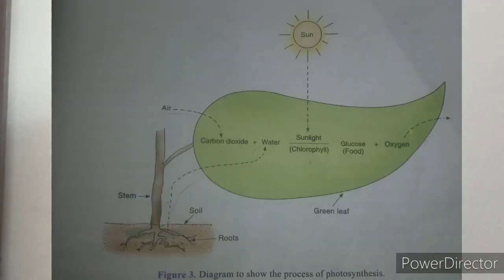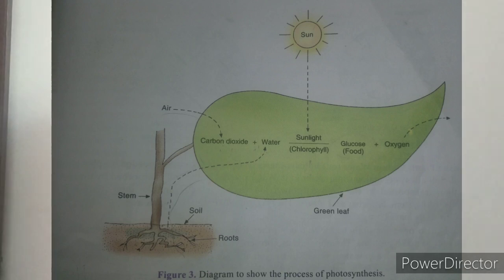Now we come to the next topic: photosynthesis. 'Photo' means light and 'synthesis' means to make. So photosynthesis is the process of making food by green plants using raw materials — carbon dioxide and water — in the presence of sunlight and chlorophyll. The products of photosynthesis are glucose and oxygen.